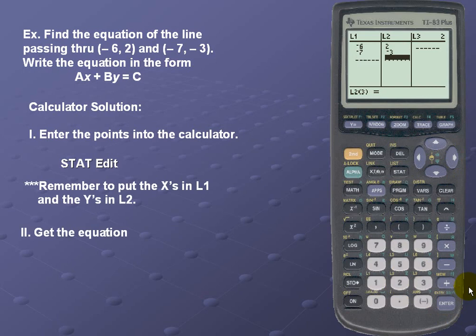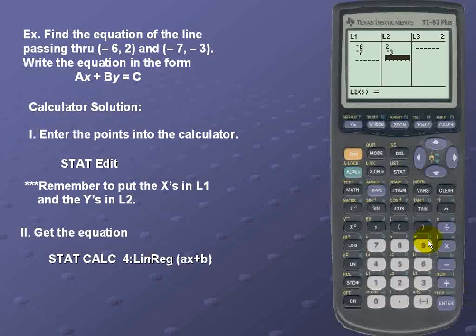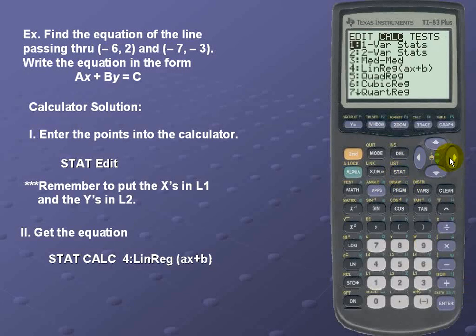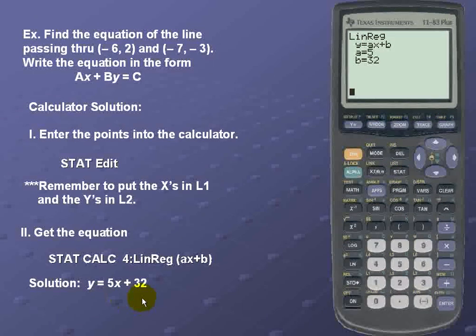Next we'll get the equation. So remember, in order to get the equation, we'll use STAT. We'll scroll over to Calculate. We'll scroll down to our fourth option. We'll hit Enter a couple of times, and we see that our equation in slope-intercept form is y = 5x + 32.